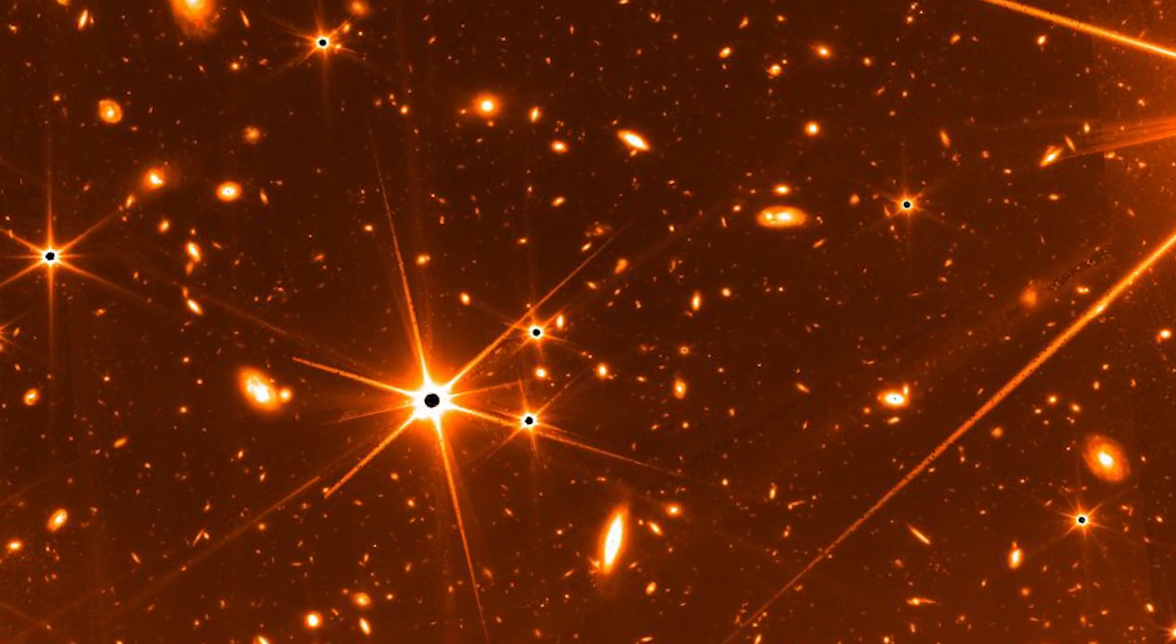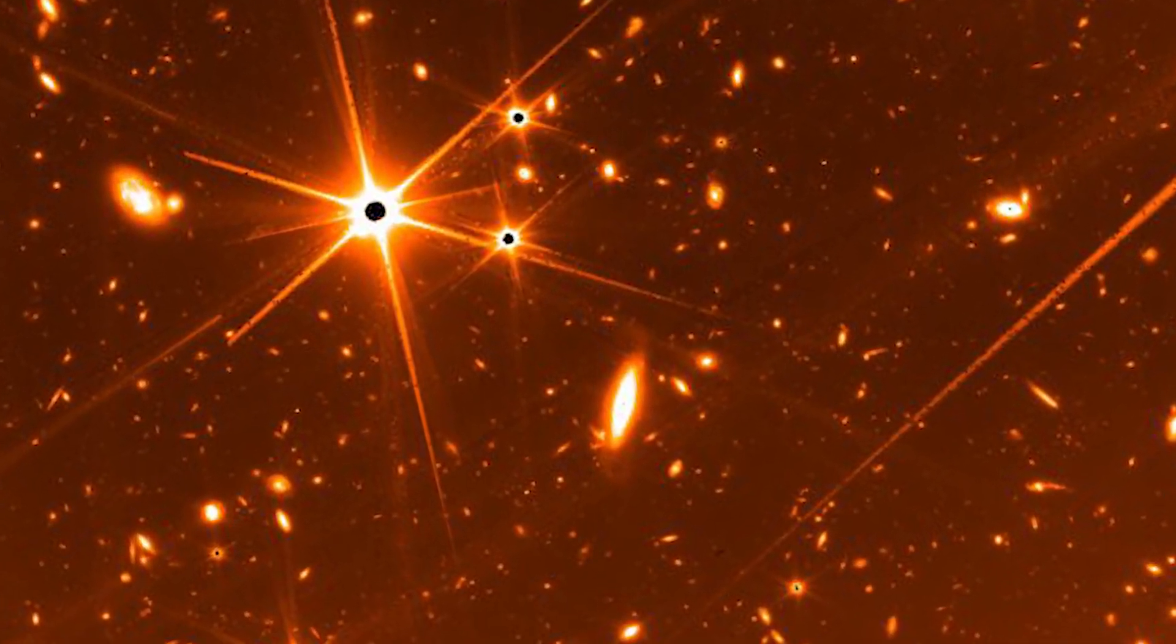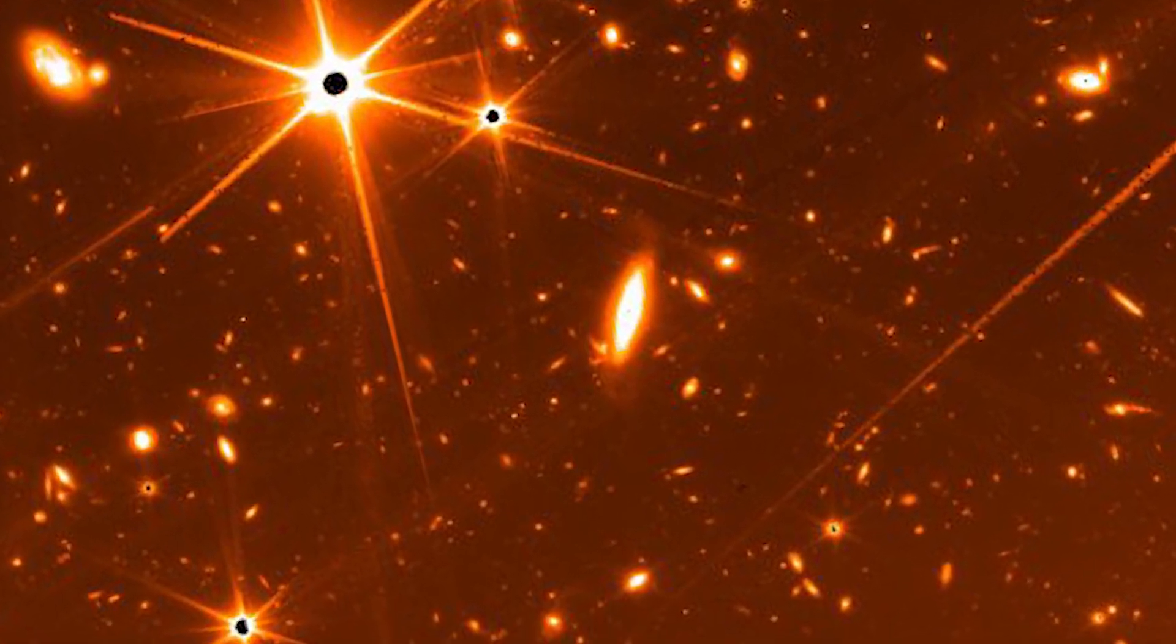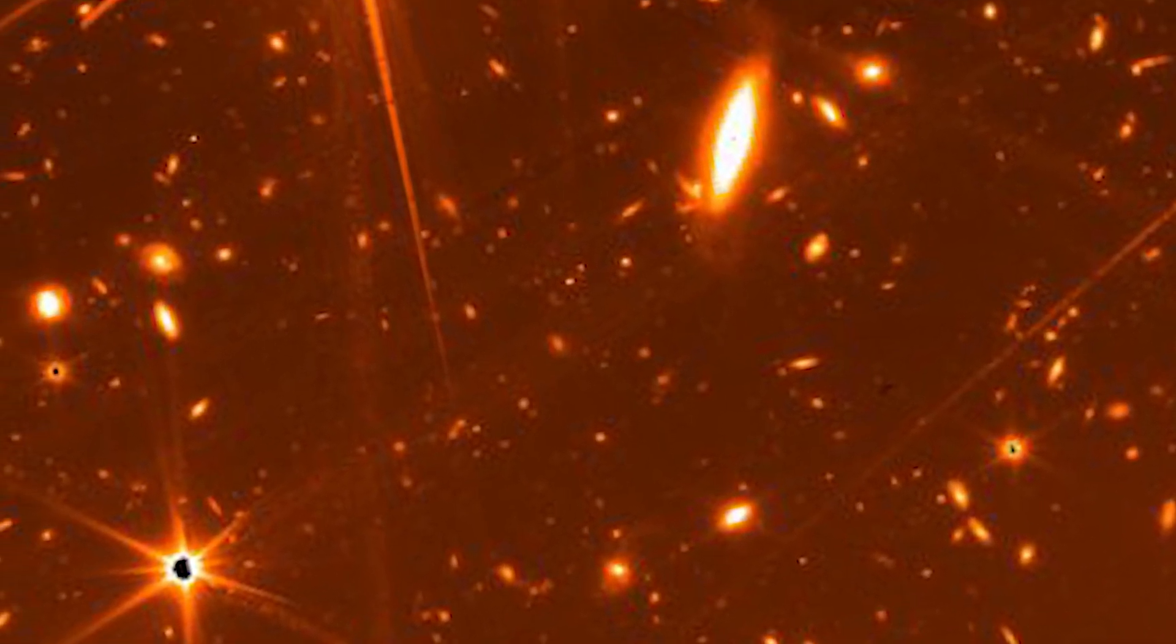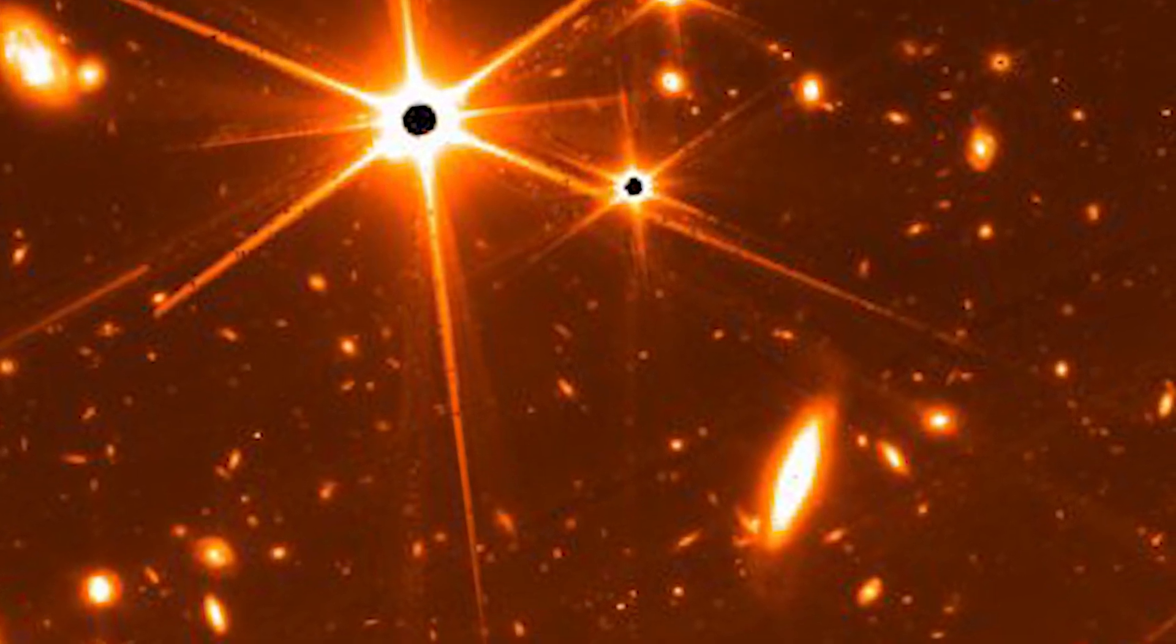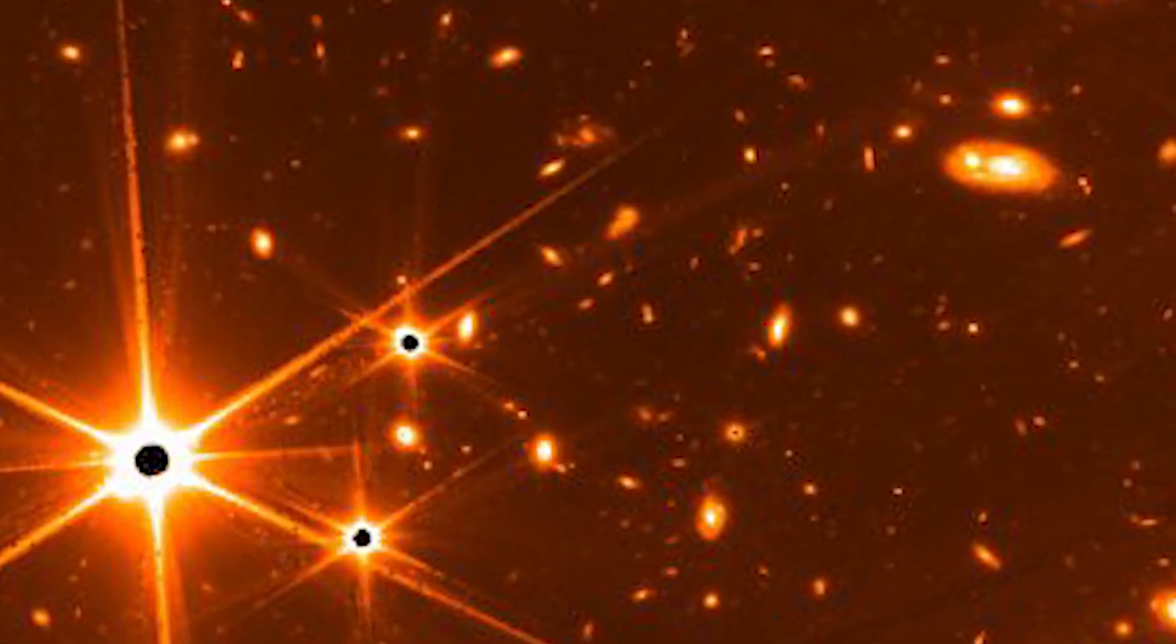The unfiltered wavelength response of the Guider, from 0.6 to 5 micrometers, helps to provide this extreme sensitivity. The image is monochromatic and is displayed in false color, with white, yellow, orange, red representing the progression from brightest to dimmest.